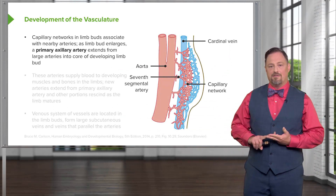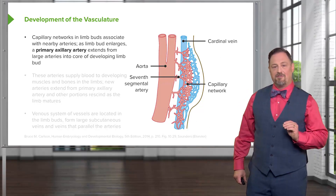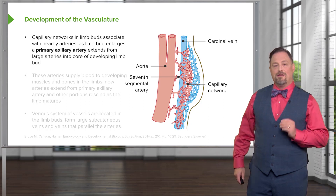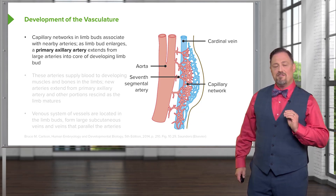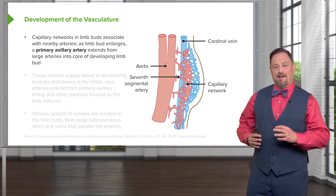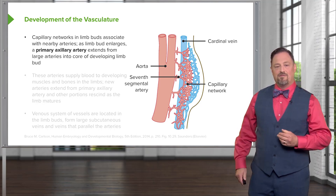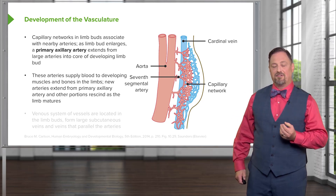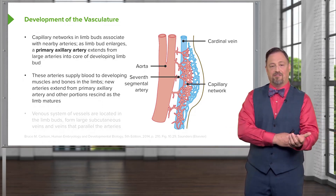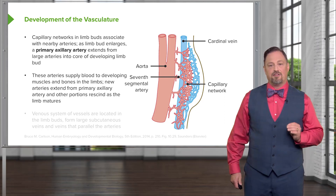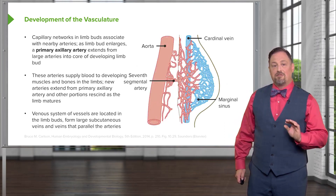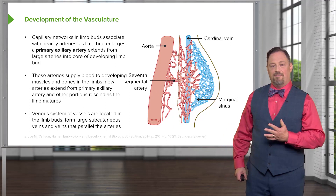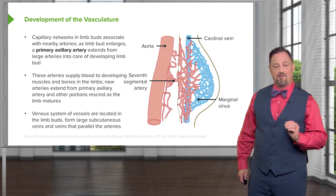The vasculature for the developing limbs comes from a segmental artery off the dorsal aorta. In the upper limb that becomes the axillary artery and in the lower limb the femoral artery — the two vessels that provide most of the blood to the limb. Initially the arteries go into the very deep substance of the limb bud, capillaries form, and the venous drainage is more superficial. As these arteries extend and enlarge they tend to stay very deep, while the cephalic and basilic veins in the upper limb and the greater and small saphenous veins in the lower limb remain as superficial veins — a remnant of the early superficial venous system during development. Even as deep veins form alongside the arteries, those superficial veins persist.